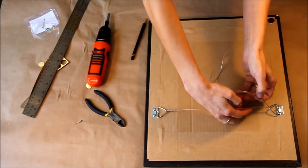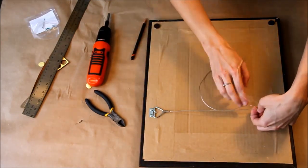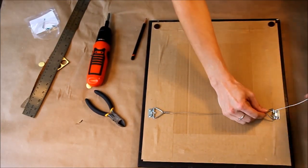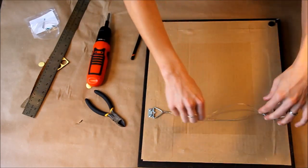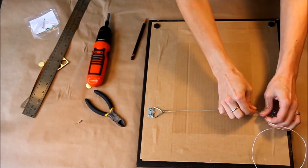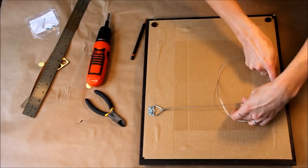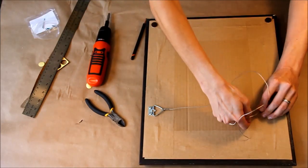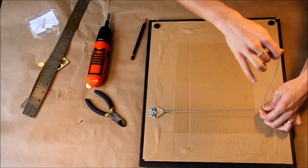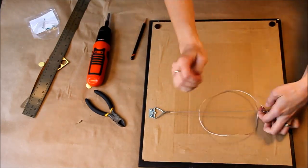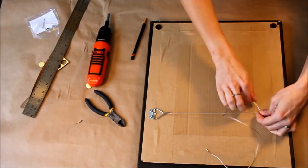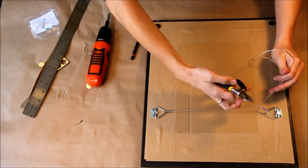So then again, you do the same thing. You loop it around, and then forward, and then through, and then start twisting again. One, two, three, four, five, six, and then just cut the excess off.